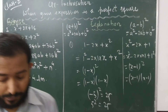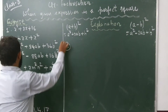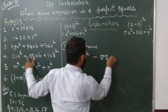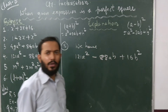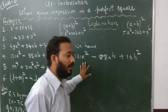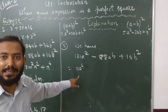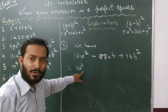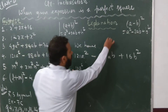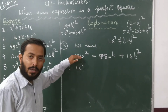Now we proceed to the third problem: 121a² - 88ab + 16b². Look at the first extreme term — it is (11a)². Please do not write this as 11a²; that is totally wrong. If you write 11a², you are showing that only a is squared, not 11. Remember: 11a² is NOT equal to (11a)². So when this type of term appears, do not get confused.